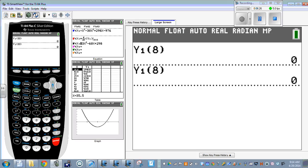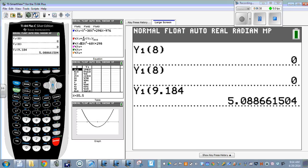We get 0. If I hit 2nd, enter, it's going to bring up that same expression. But now I'm going to put in the 9.184. And I prefer to put in the whole decimal, but the calculator is not agreeing with me. So we get 5.089.